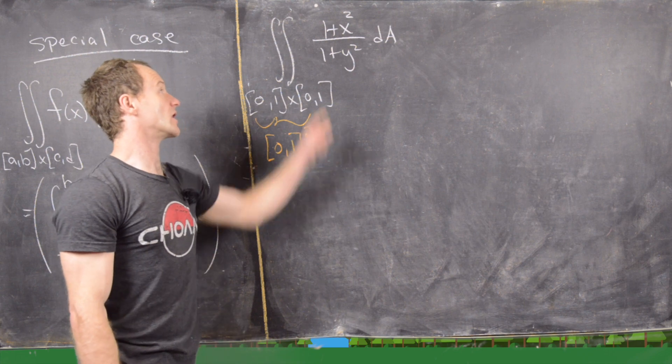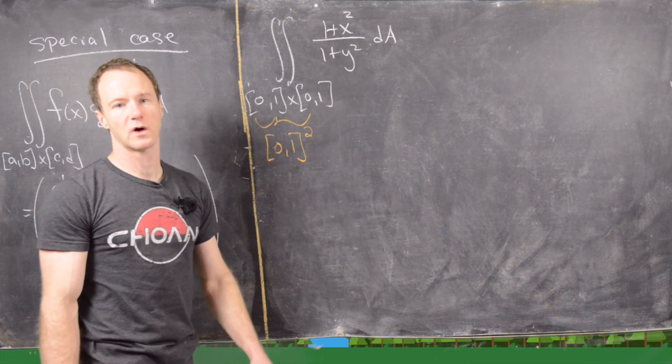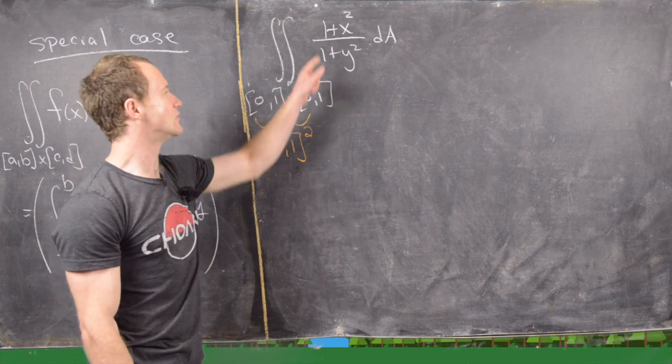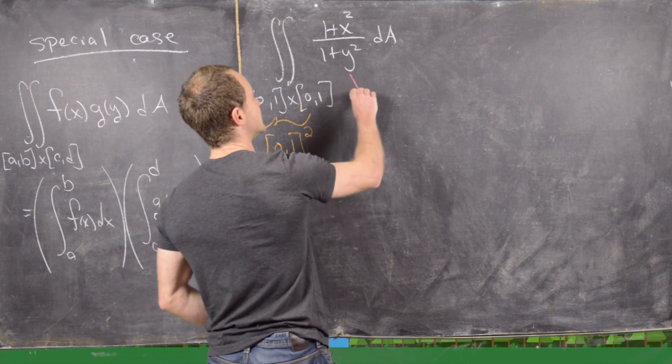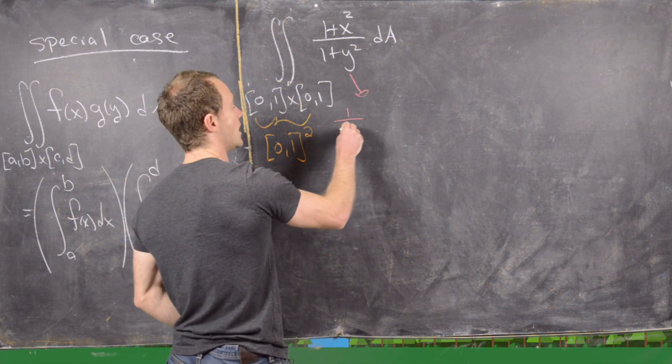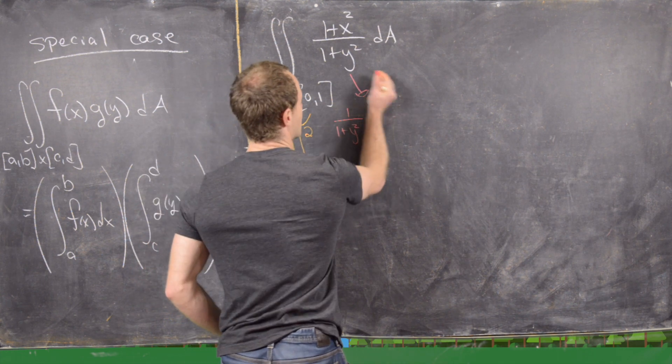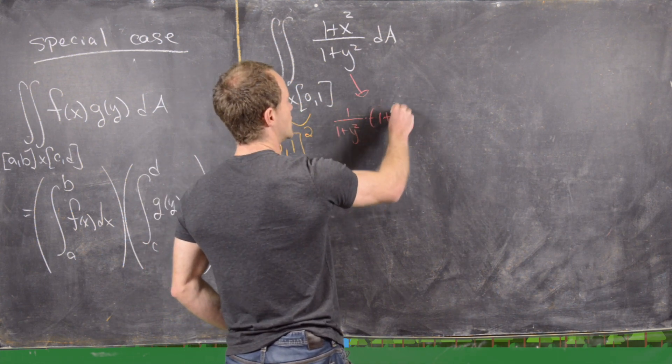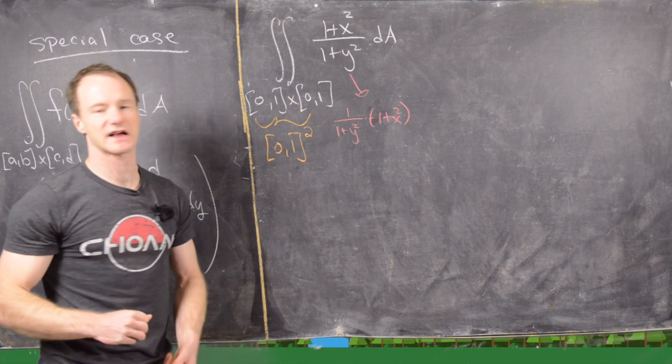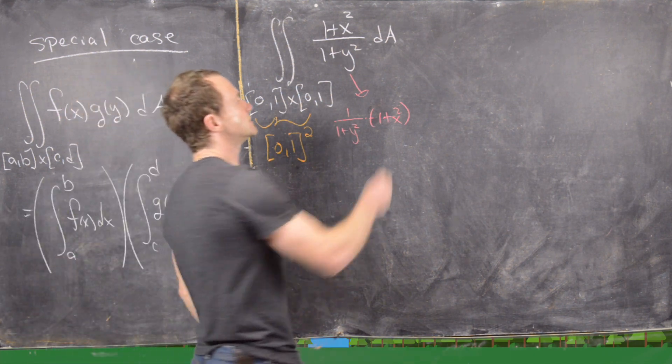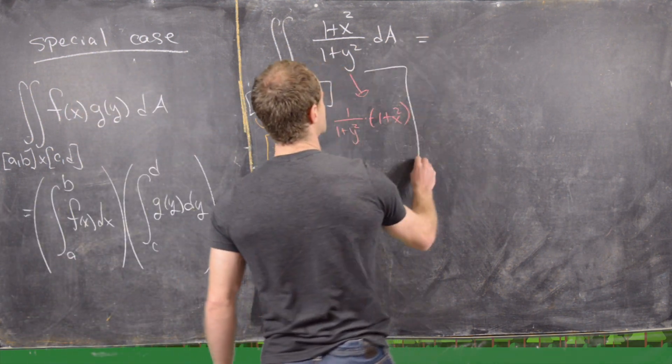And I'll just point out that sometimes that is notated as [0,1]². And then our integral will be (1 + x²)/(1 + y²). So now notice we can envision this as the function 1/(1 + y²) times (1 + x²), which indeed makes that a function of x times a function of y.